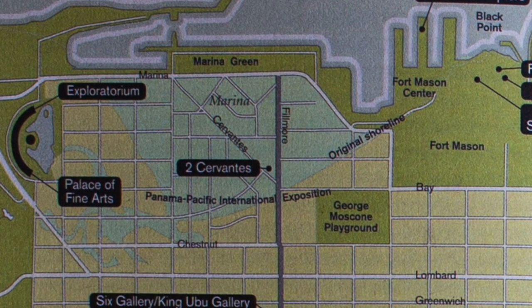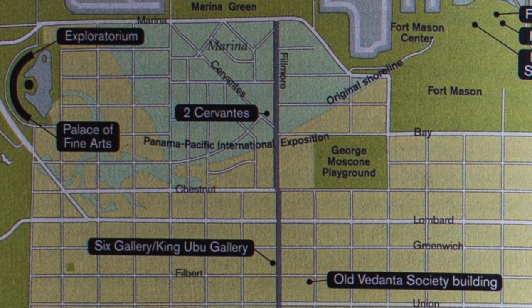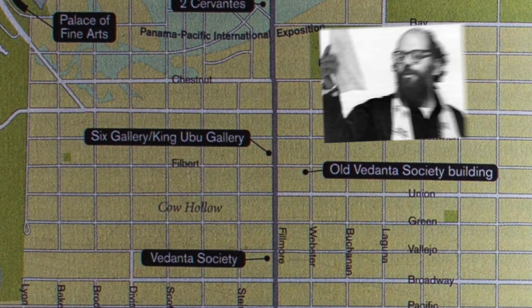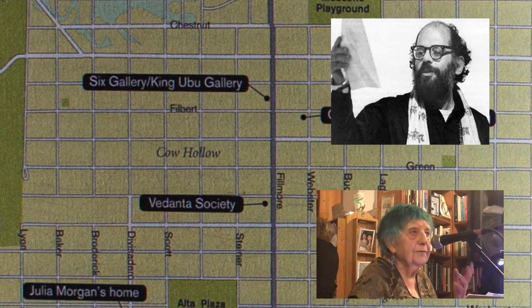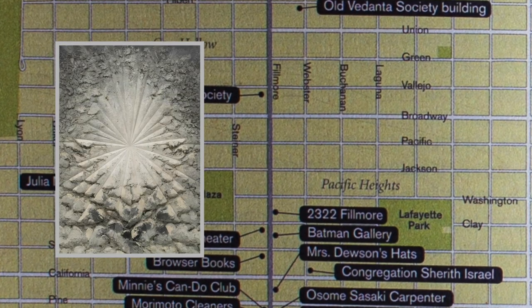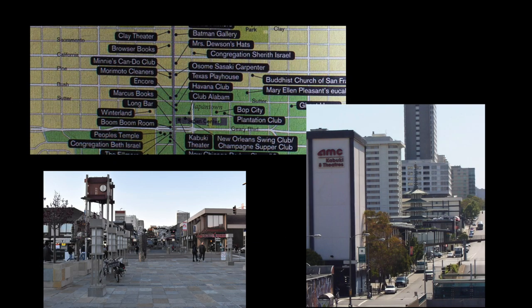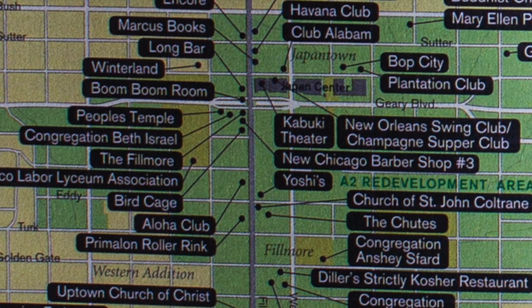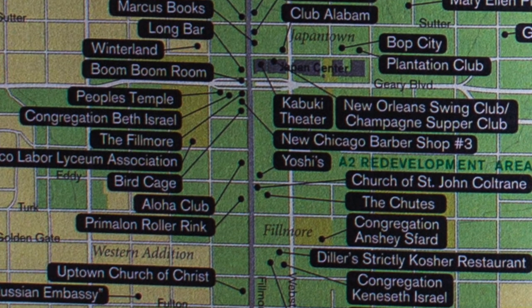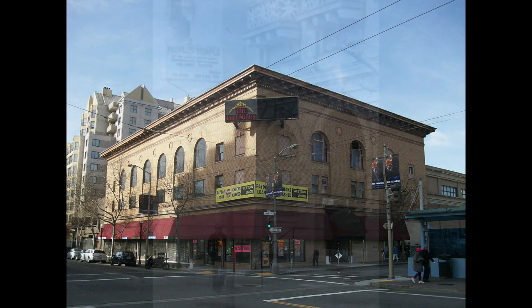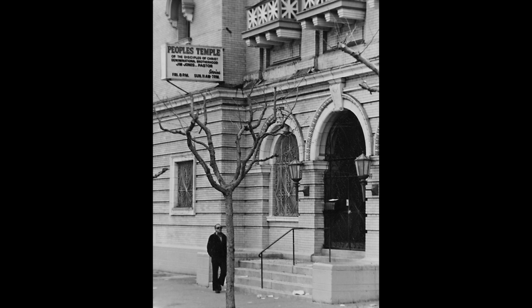The northern end traverses some of the ritziest parts of the city in the Marina, Cow Hollow, and Pacific Heights. But this is also the home of Sixth Gallery, which launched the Beat Poetry movement with Allen Ginsberg, our friend the late Ruth Weiss, and others. 2232 Fillmore in Pacific Heights was the location where Jay DeFeo created her monumental painting, The Rose. Further south we encounter Japantown, a shadow of its former self. Many of the Japanese Americans who lived here were displaced during the World War II internments. Across Geary Boulevard was the Fillmore neighborhood, a great center of black culture in the western U.S. that was largely leveled by redevelopment. The Fillmore concert hall survived and thrived, but this is also the milieu from which Jim Jones' People's Temple emerged. And further south we encounter a long-vanished neighborhood populated by Jewish immigrants from Eastern Europe.